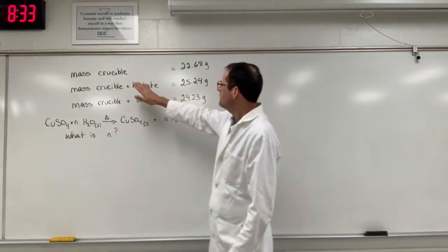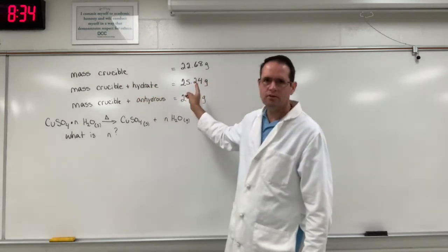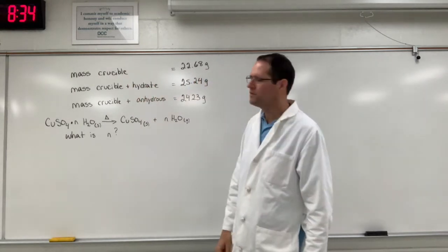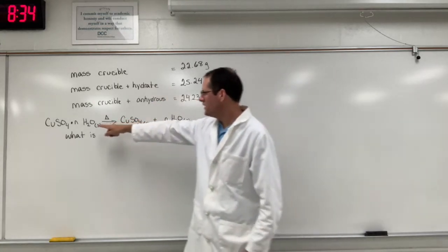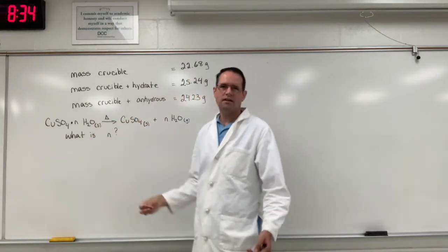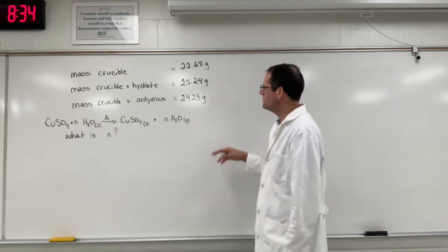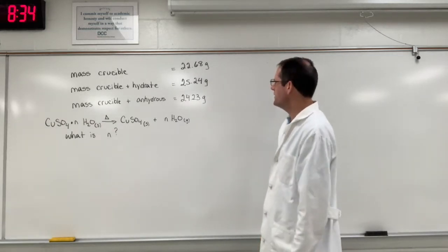So we have the mass of the crucible which I've written that number down, 22.68 grams. The mass of the crucible and the hydrate—remember that's the copper sulfate that contains water molecules entrapped within the crystalline lattice—that's 25.24 grams.